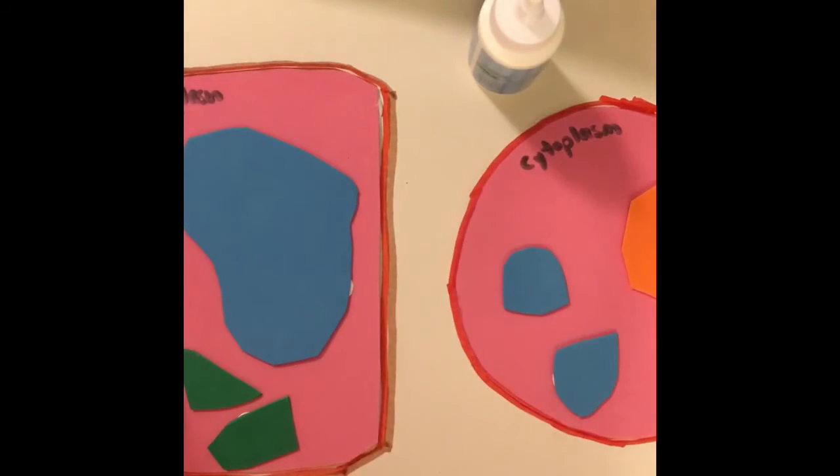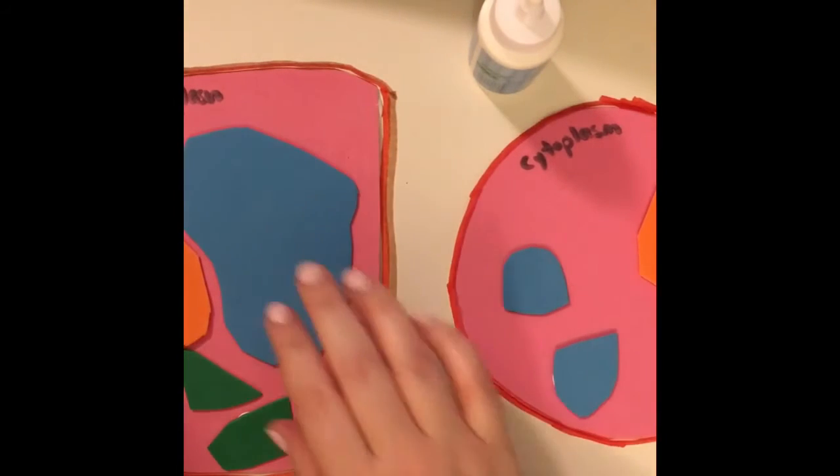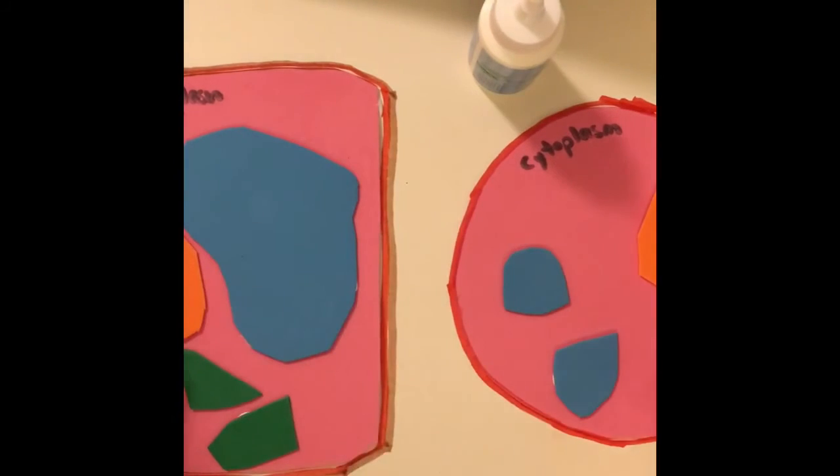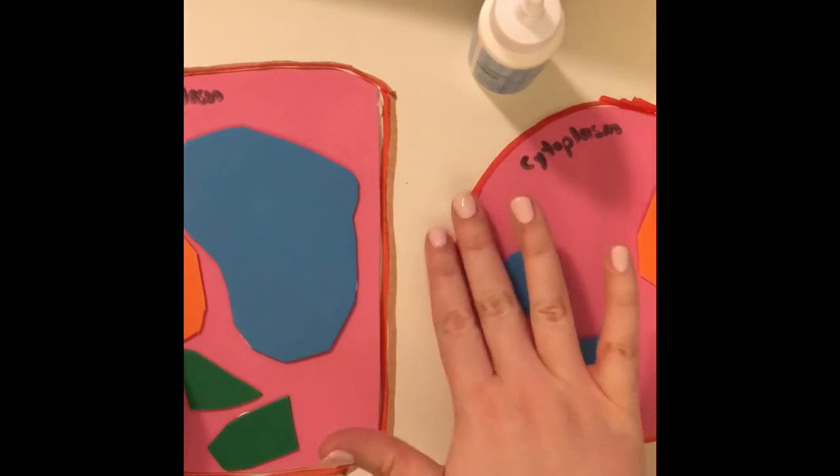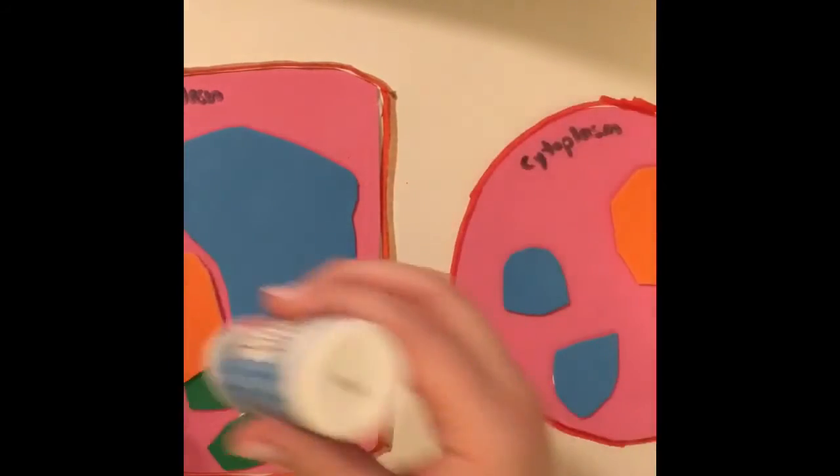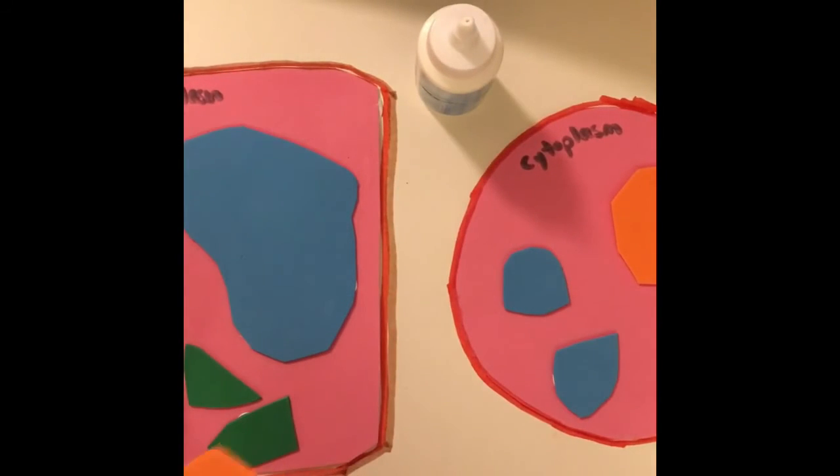One circle for the animal and one circle for the plant. Now you have to do your best when you're gluing things down so that they all fit within the pink cytoplasm. Nothing should be off of the cytoplasm.